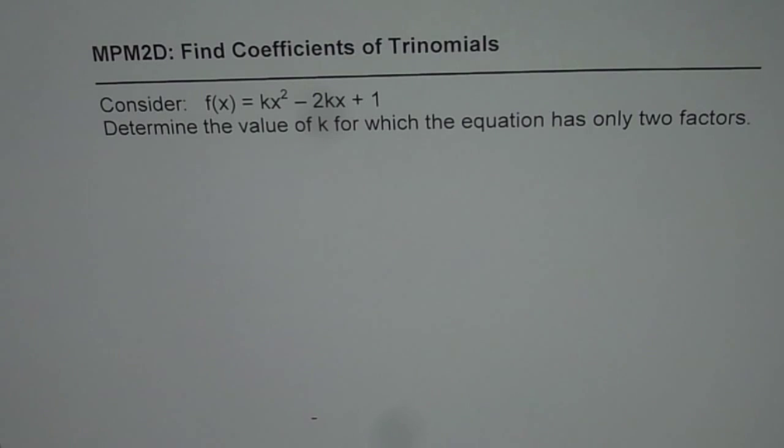Consider the function f(x) equals kx squared minus 2kx plus 1. Determine the value of k for which the equation has only two factors.